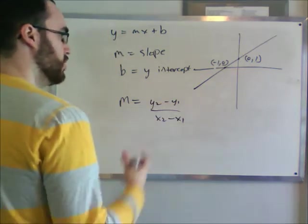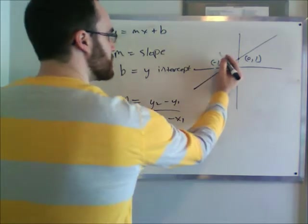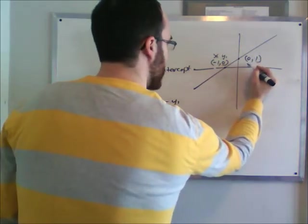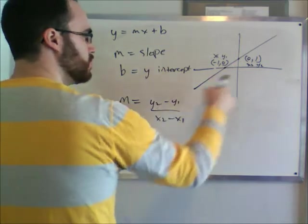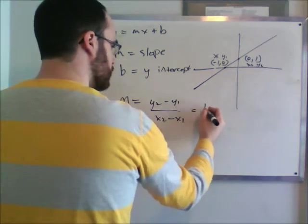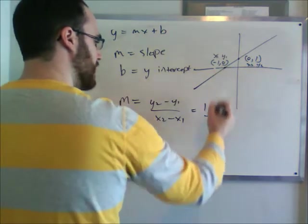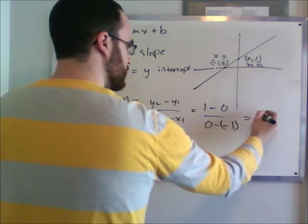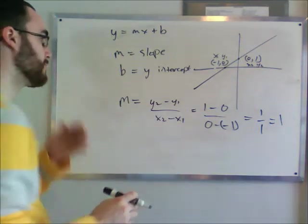So let's just plug in our points. We've got these two values here, so this is going to be (x1, y1), and this is going to be (x2, y2). So y2 is 1, so this is going to be equal to 1 minus 0 over 0 minus (-1), which is going to be equal to 1 over 1, which is just equal to 1. So our slope is 1, so we found the slope.